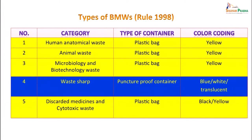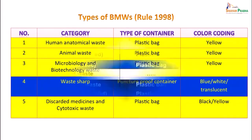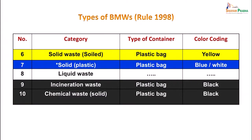The different types of biomedical waste as per the earlier rule of 1998: there was human anatomical waste, animal waste, and microbiology and biotechnology waste — all collected in yellow-coloured plastic bags. Waste which was sharp was in blue or white translucent puncture-proof containers. Discarded medicines and cytotoxic waste was again in a plastic bag which could be black or yellow. Solid waste and soiled solid plastics could again be in yellow or blue or white plastic bags. Incineration waste and chemical solid waste was in a black plastic bag. This was the rule of 1998.